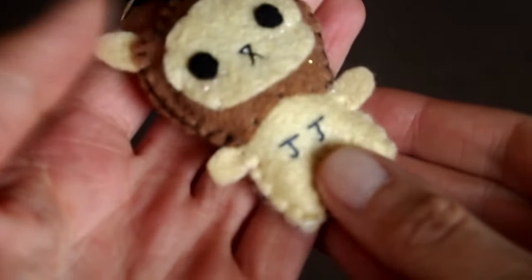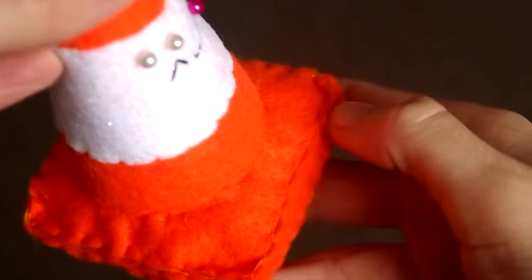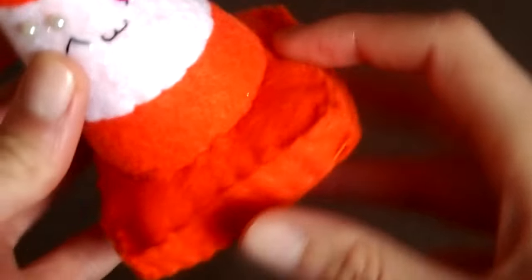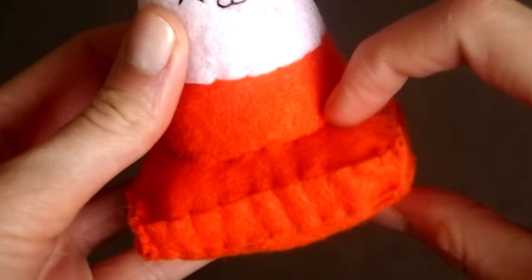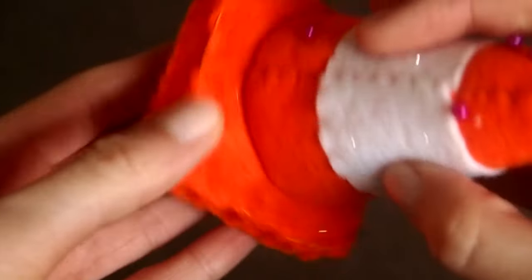So I use the blanket stitch on my flat plushies like this. You can see I used the blanket stitch to sew all the way around here. And I also use it on my 3D plushies as you can see by this traffic cone. I use the blanket stitch on these edges, and I've also used the blanket stitch on this edge but I turned it inside out so it's not as obvious.